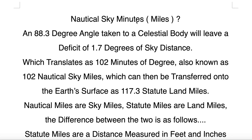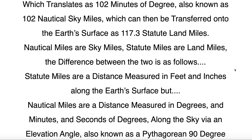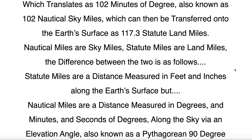So, nautical sky minutes or miles: an 88.3 degree angle taken to a celestial body will leave a deficit of 1.7 degrees of sky distance, which translates as 102 minutes of degree, also known as 102 nautical sky miles, which can then be transferred onto the Earth's surface as 117.3 statute land miles. Nautical miles are sky miles. Statute miles are land miles. The difference between the two is as follows.